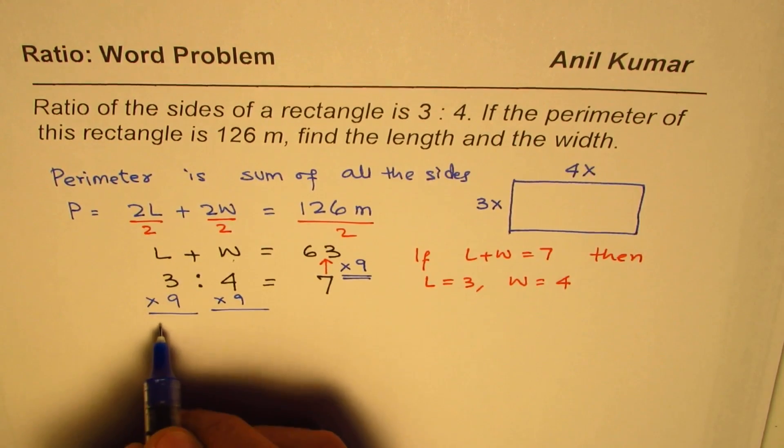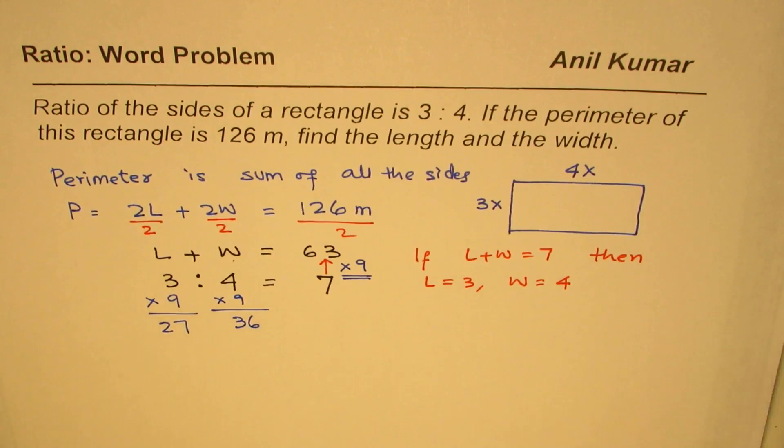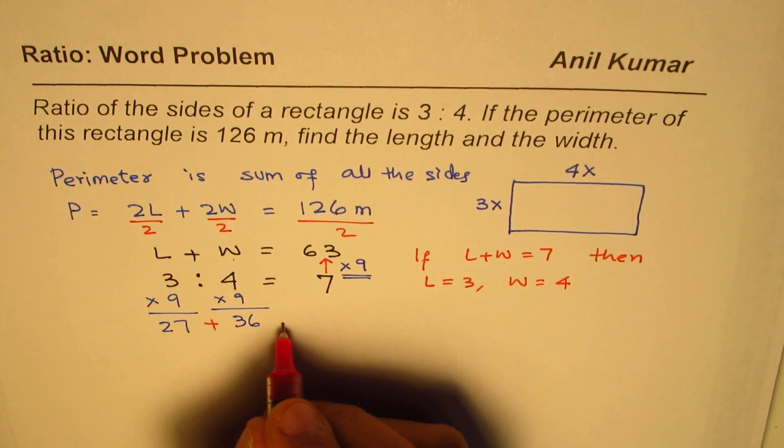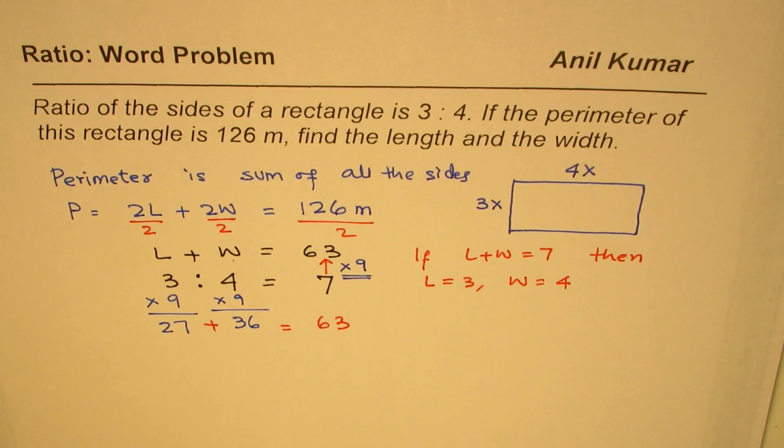9 times 3 is 27, 9 times 4 is 36, correct? If you add them, what do you get? You do get 63. Is that okay? So that is a way to solve this question.